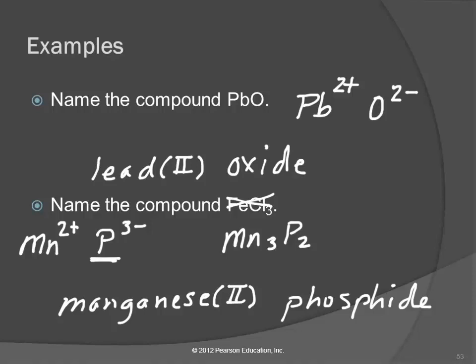If it doesn't work out that way, then you have to look and say, I've got 2 phosphides, and they're each minus 3. So that's a total of minus 6. So I need a total of plus 6 over here. And I've got 3 manganese, and I need to know what the charge is so that that adds up to plus 6. So it's got to be 2. So there's two different ways to find the charges.